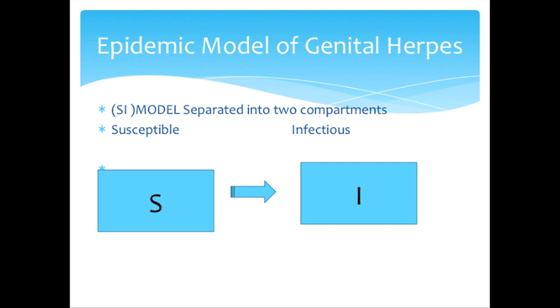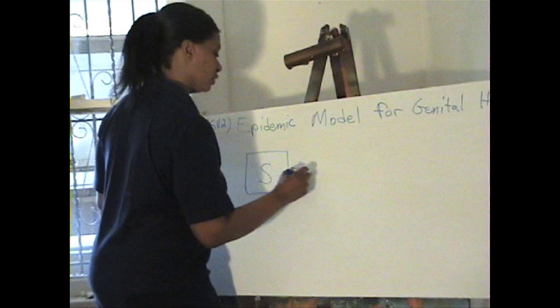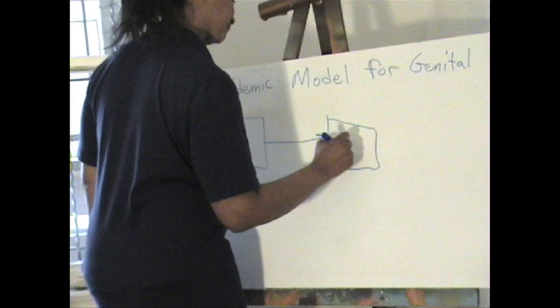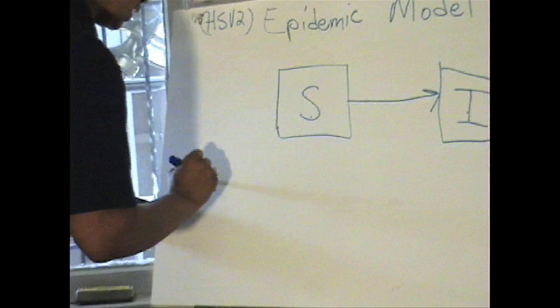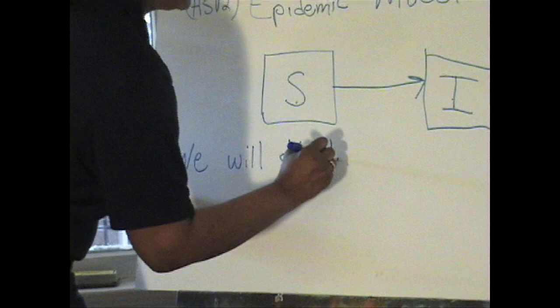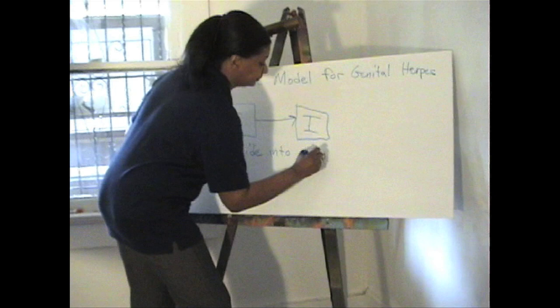We ask which is the susceptible, which goes to the infected. Susceptible, infected — that begins the beginning of our model. We will divide into two compartments.